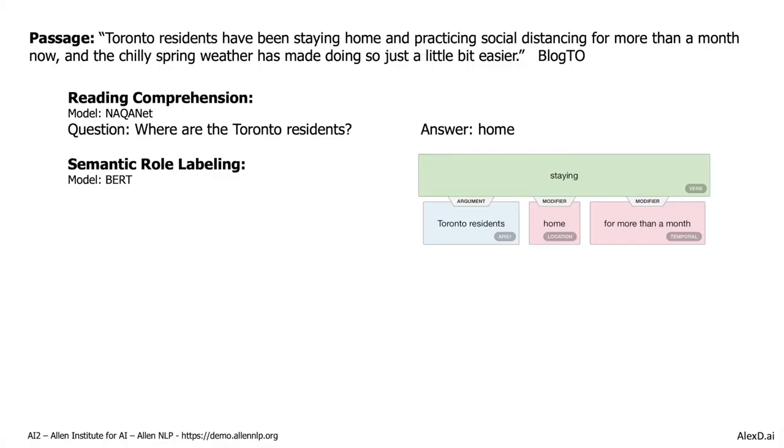If you want to understand the parts of speech or semantic role labeling, you can apply a different technique of natural language processing and identify which word is the subject, where the verb is, what kind of verb it is, and what role 'home' plays — in this case, home is a location.